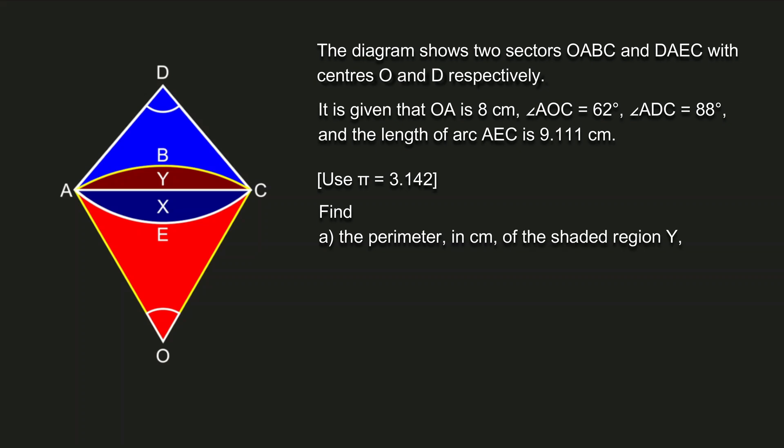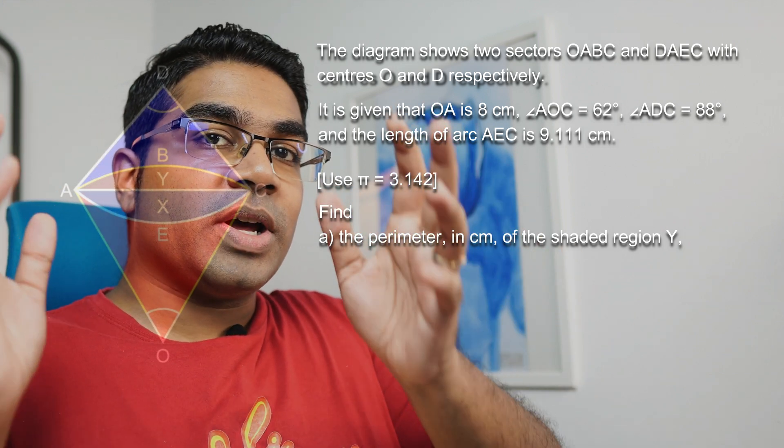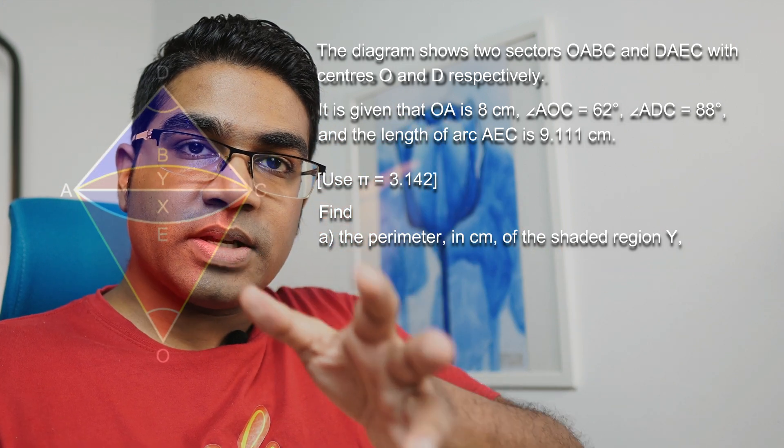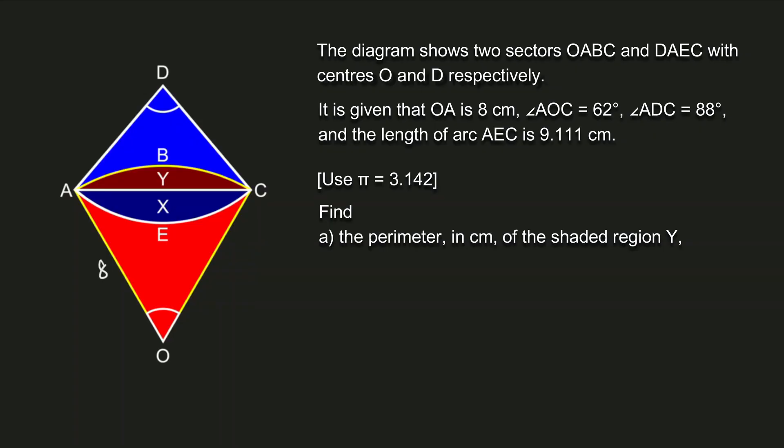Part A: Find the perimeter in centimeters of the shaded region Y. Let's focus on part A first. Before we begin answering the question, as always we should transfer all the information in the question to the diagram. So let's label the diagram completely: OA is 8 centimeters, AOC is 62 degrees, ADC is 88 degrees, length of arc AEC is 9.111.